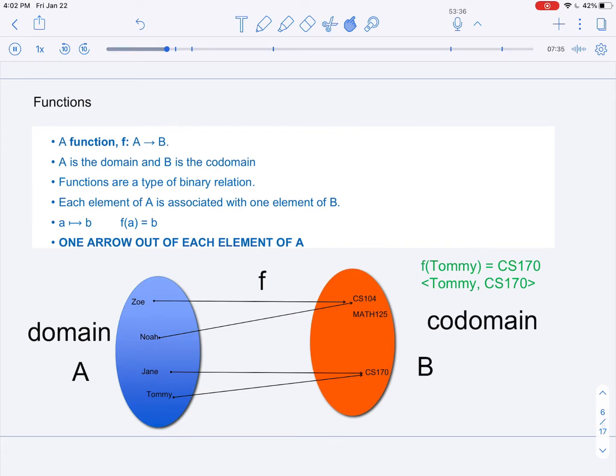Now, we can specify this binary relation in two ways. You may be more comfortable from other sources of specifying a function f as f(Tommy), if Tommy is a point in the domain, equals CS-170.